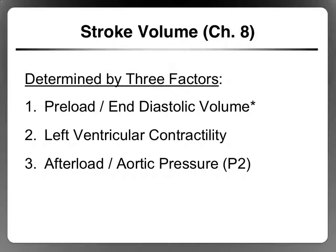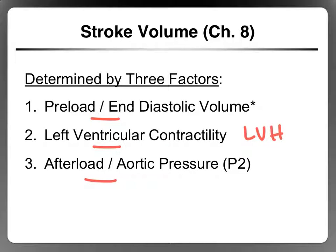Stroke volume is determined by three factors: preload EDV, left ventricular contractility, and afterload aortic pressure. We've already established that LVH with training affects left ventricular contractility. LVID affects end-diastolic volume, and pulmonary ventilation also affects end-diastolic volume.